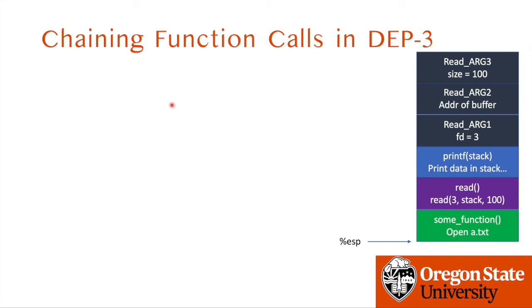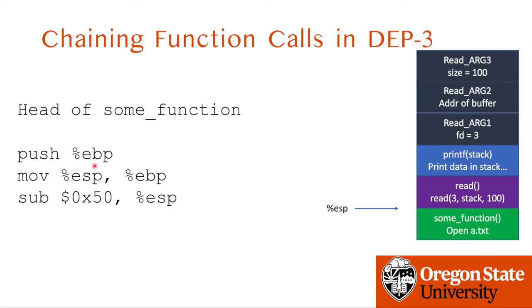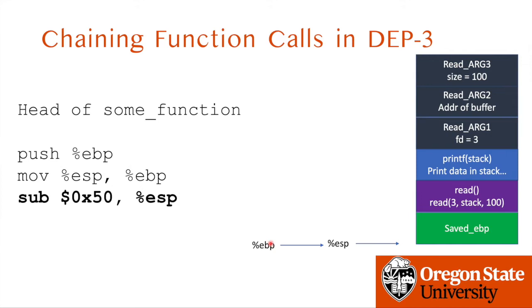We need to chain two function calls. To learn about that in detail, let's first take an example of chaining three functions when solving the DEP3 challenge. The stack configuration at the first return looks like this diagram. When the function returns, it pops the instruction pointer from the stack, so it will execute the sum function. Pop means ESP moves one up. When execution gets into the sum function, at the head it will execute push EBP, pushing saved EBP and moving EBP to ESP, then sub ESP to reserve a new stack space — steps for creating a new stack frame.